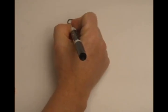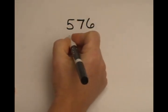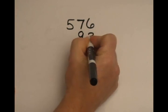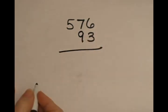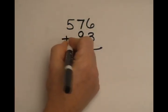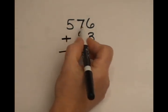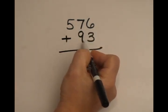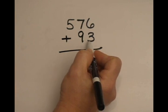If I'm going to do 576 added to 93, how am I going to do this in my head? So if I was going to do this in my head, I'd say 576 plus 93. 93 actually looks like 100 minus 7.